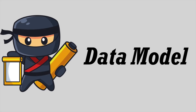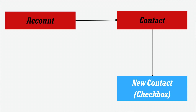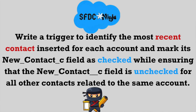First we will understand the data model. In this scenario, we are going to use two objects: account and contact. On the contact object, we have a checkbox called 'New Contact'. Now let's understand the scenario. Whenever a contact gets inserted on an account, we need to identify the most recent contact inserted on that account, and we have to check the New Contact checkbox for it. For other related contacts, we have to ensure that the New Contact checkbox field is unchecked.